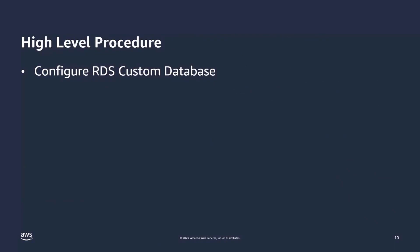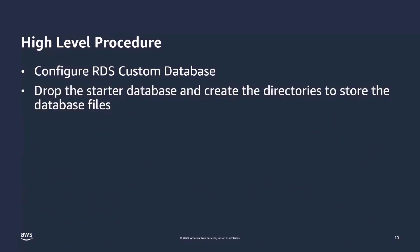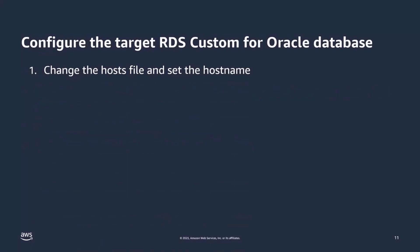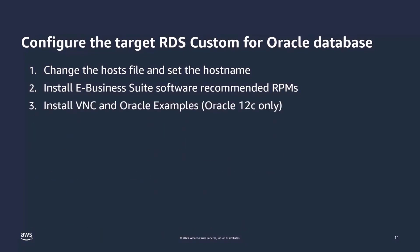What is the high-level procedure to configure RDS Custom and Oracle E-Business Suite together? First, we configure the database. We'll drop the starter database and create the directories to store the database files, do the database account configuration, and finally validate that the EBS system works and that you can connect to the environment. The first step is changing the host file and setting the host name — most of the time this is easy, simply copying the /etc/hosts file from source to target. Next, configure the recommended RPMs for E-Business Suite, including things like ELF Utils and LibXP. If you're on Oracle 12c, you'd also install a VNC like Tiger VNC and the Oracle Example CD.